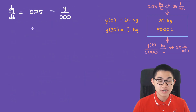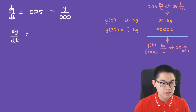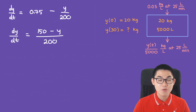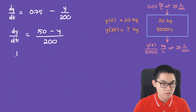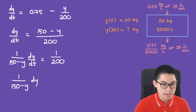Step 3 is to solve this equation. First, 0.75 is the same as 150 over 200, so dy/dt equals (150 − y) over 200. We bring all the y terms to one side: (1/(150 − y)) dy/dt equals 1/200. Multiplying both sides by dt gives (1/(150 − y)) dy equals (1/200) dt.